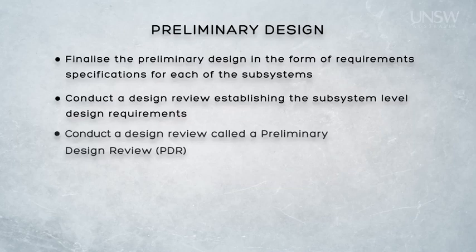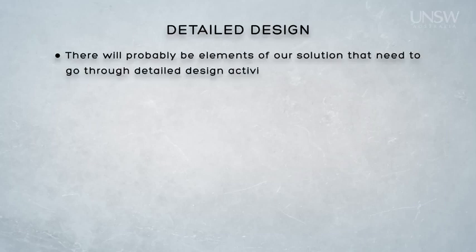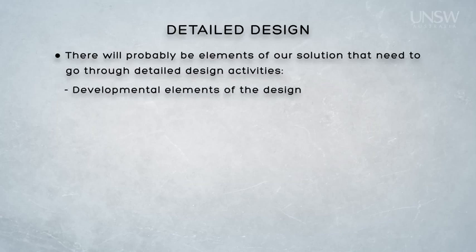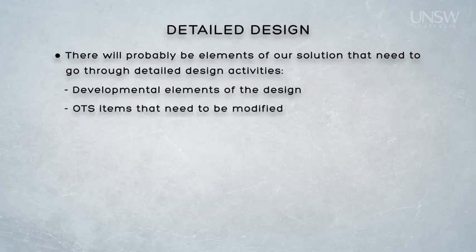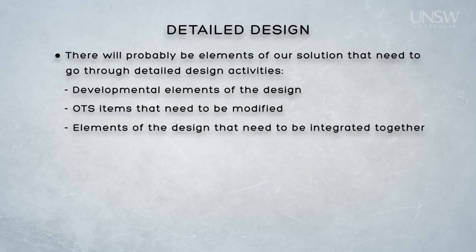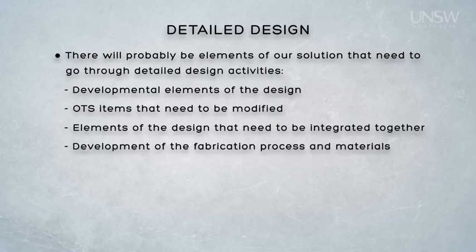Once the design review is complete for each of the subsystems, we can then move on to detailed design. From our preliminary design review, we have confirmed decisions about how each of the subsystems will be realised. Some will be procured off the shelf, others will be modified in some way, and others still will be designed from scratch. The subsystems that need to be modified or developed from the ground up will need to go through the detailed design process. Even those subsystems that are procured off the shelf will need to be integrated to form the system — that integration effort is also part of the detailed design process.